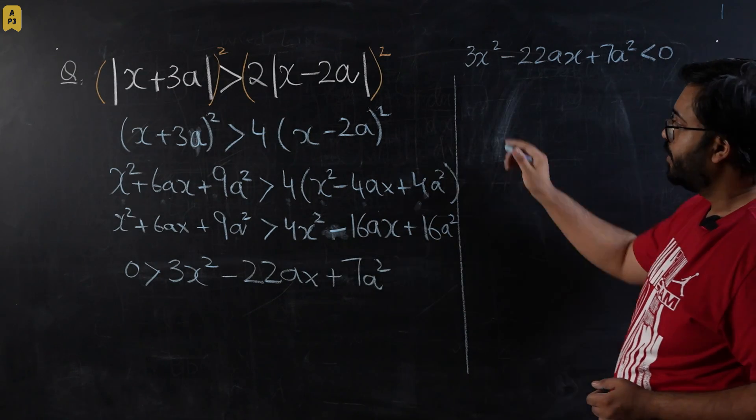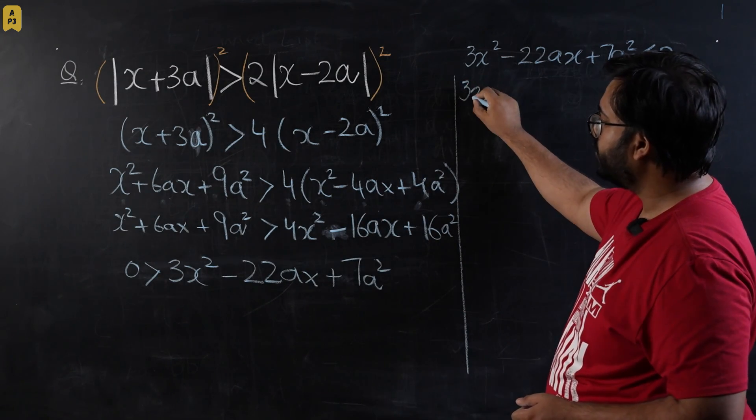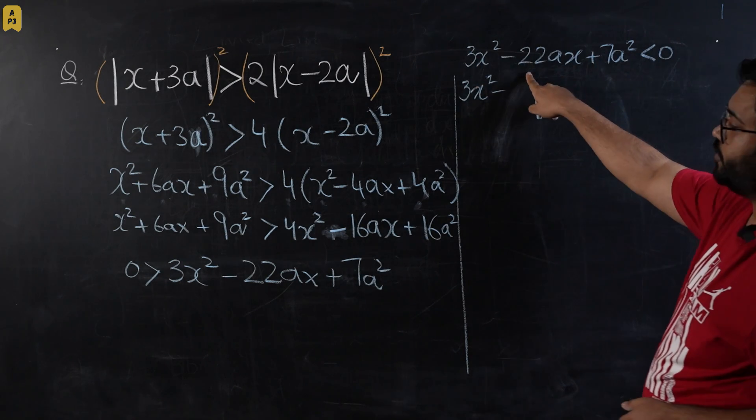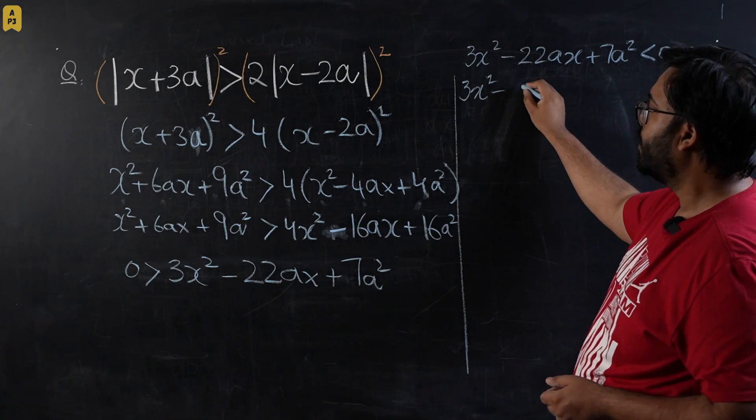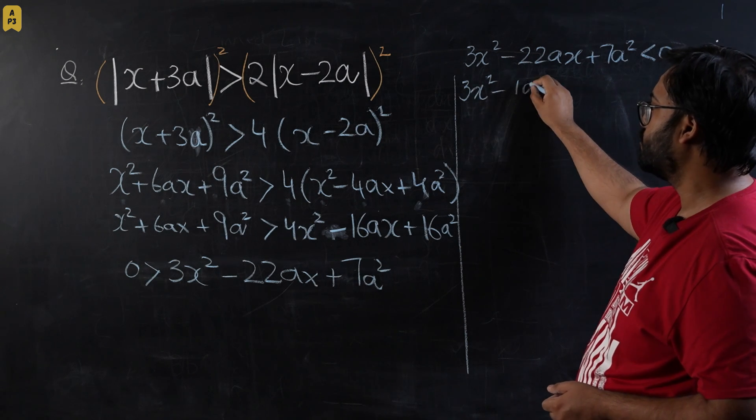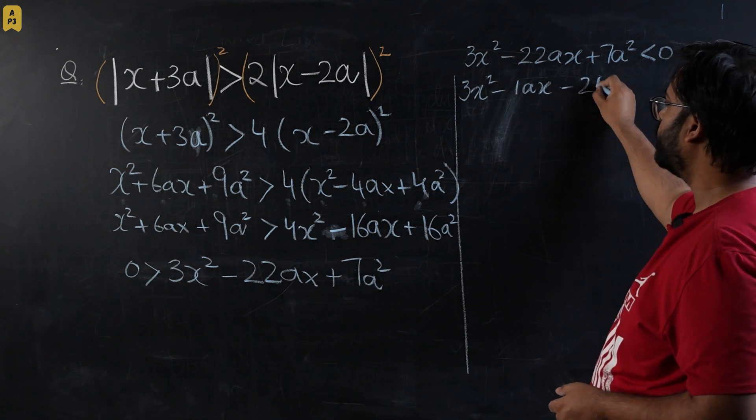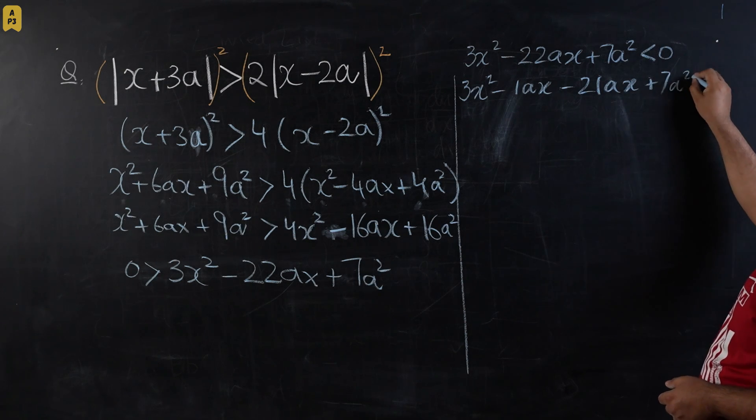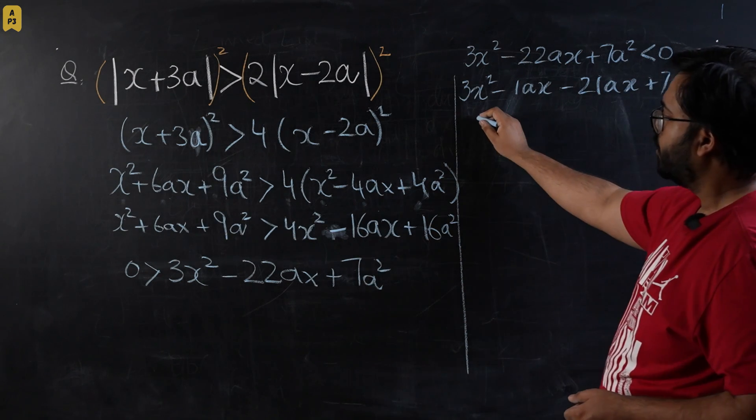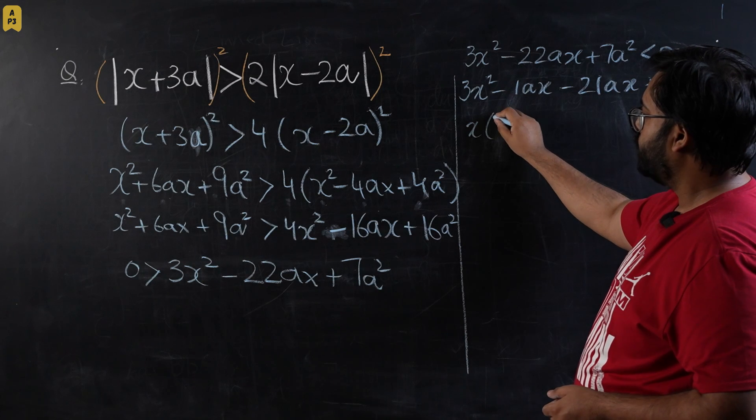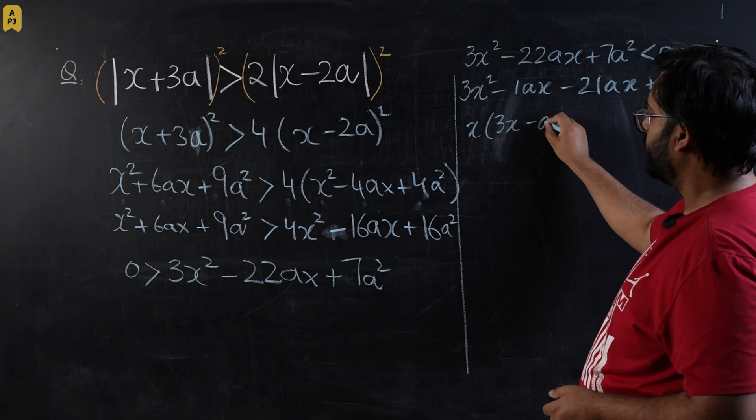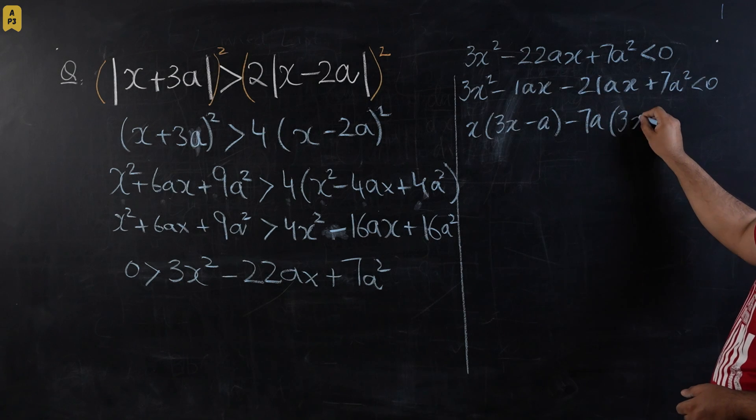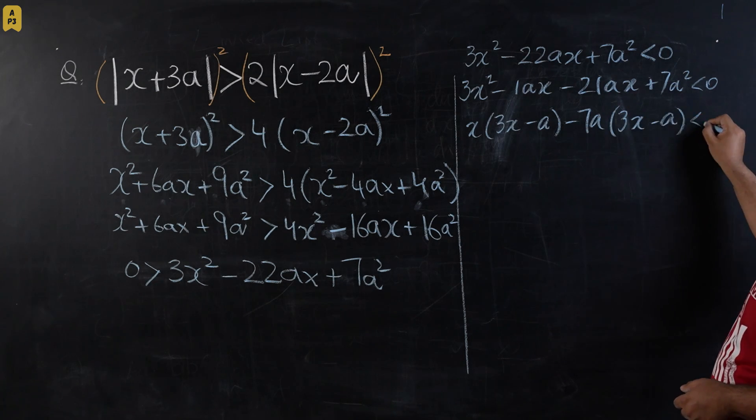Now I'm going to factorize the left hand side. 3x squared, so 3 times 7 is 21 and we know that 21 and 1 is 22, so minus 1ax minus 21ax plus 7a² is less than zero. So over here x times (3x - a) minus 7a times (3x - a) that would be less than zero.